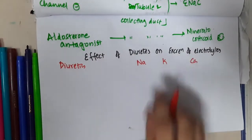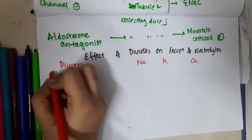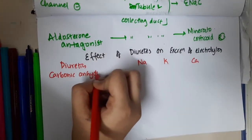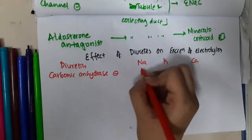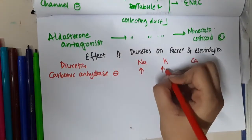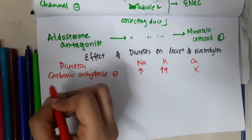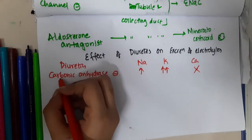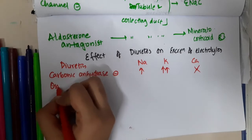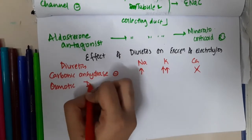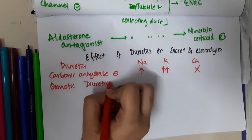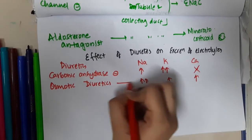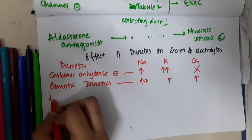First we have carbonic anhydrase inhibitors. Carbonic anhydrase inhibitors increase sodium excretion, increase potassium excretion, and no excretion of calcium. Then osmotic diuretics will increase sodium excretion, increase potassium excretion, and increase calcium excretion.